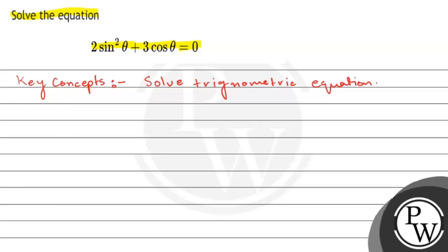One trigonometric identity will also be used here, that is: sine squared theta plus cos squared theta equals 1. We will use this trigonometric identity to solve this equation and find the value of theta.